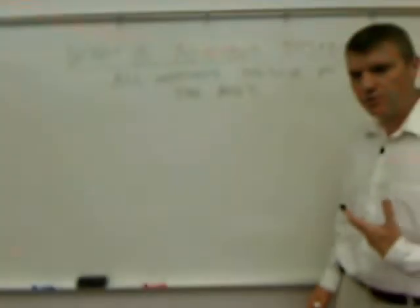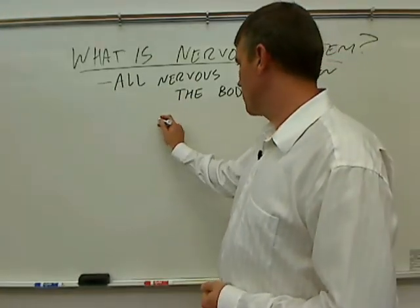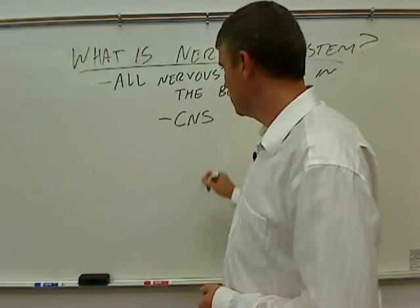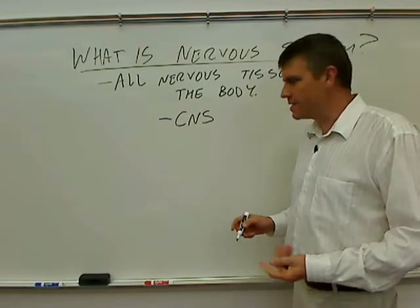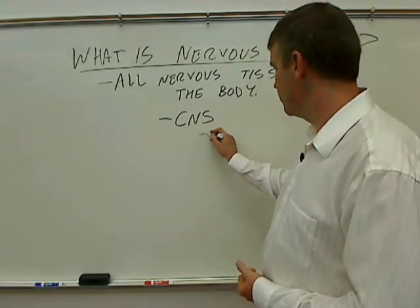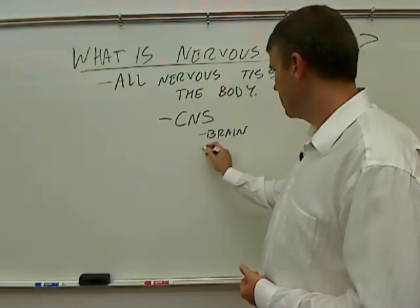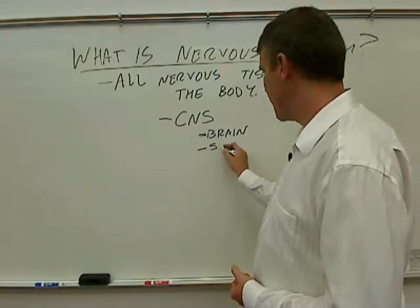And in terms of the major parts, there are two major categories to remember. The first one is CNS, or central nervous system. And the CNS consists of the brain and the spinal cord.